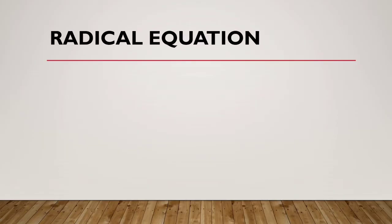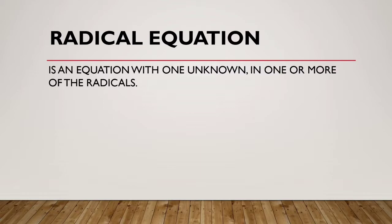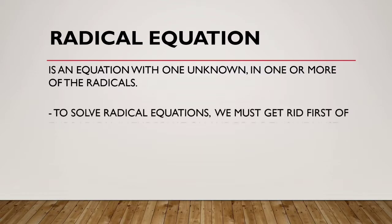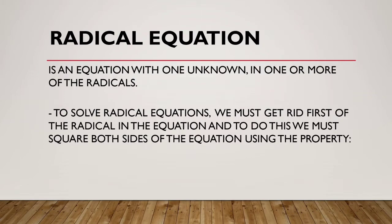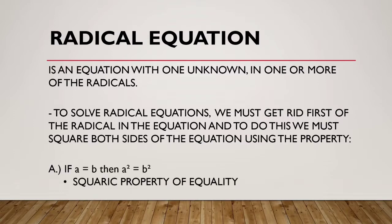A radical equation is an equation with one unknown in one or more of the radicals. To solve radical equations, we must first get rid of the radical in the equation. To do this, we square both sides of the equation using the property: if A is equal to B, then A squared is equal to B squared. We call this the squaring property of equality.